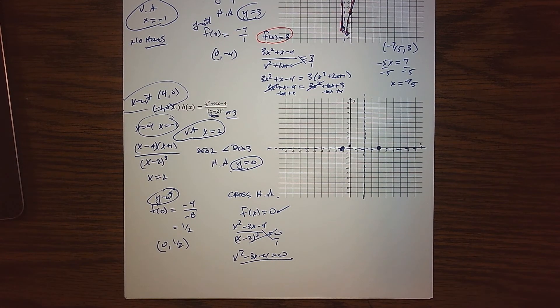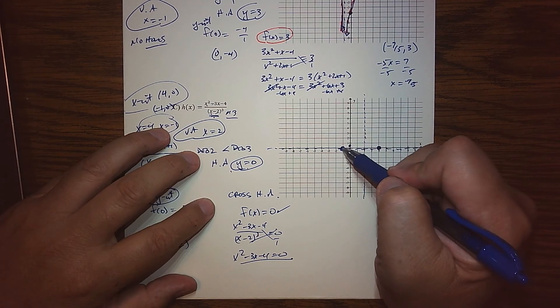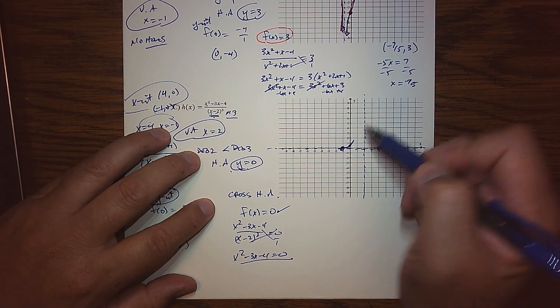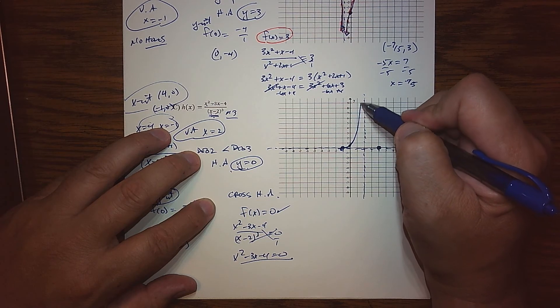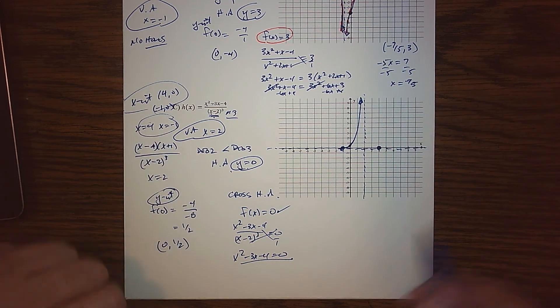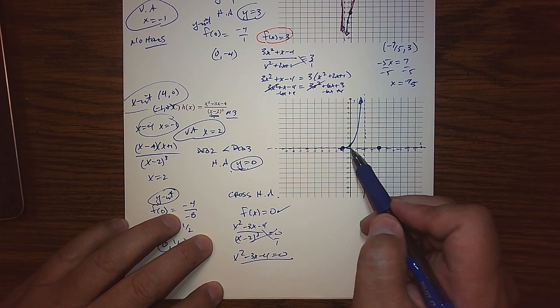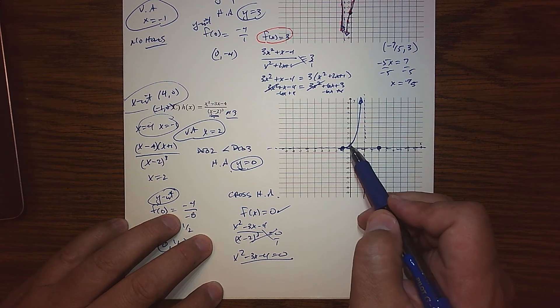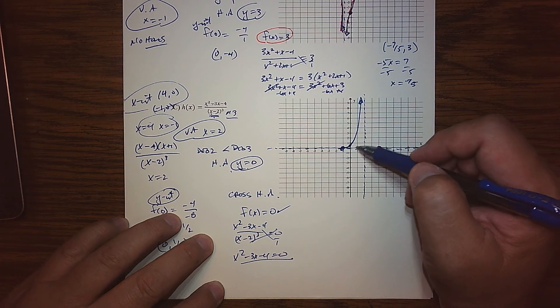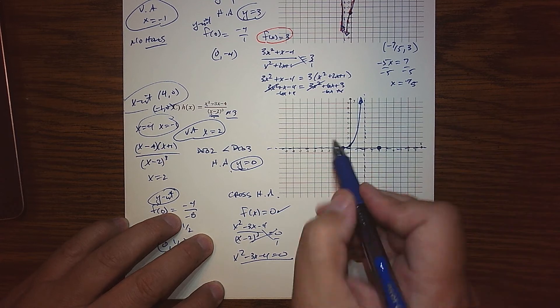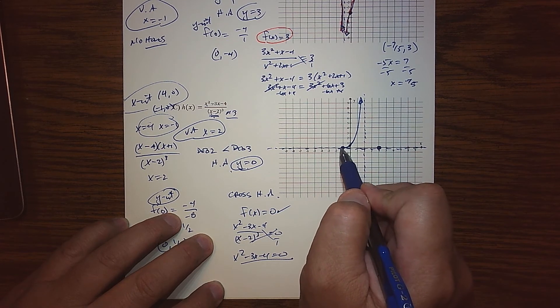We are actually crossing the x-axis at 4, 0 and at negative 1, 0. And I have a y-intercept at 0 and a half. So what does this tell us right now? This tells us that this graph, in this direction, has to be doing this - it's got to be doing that.